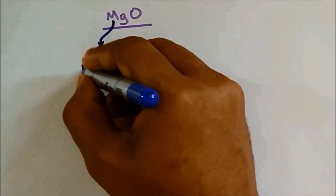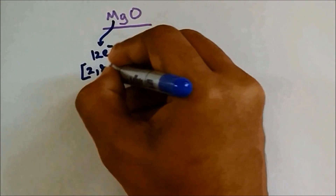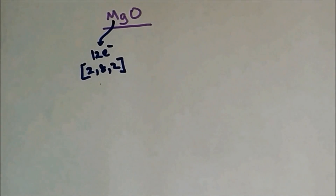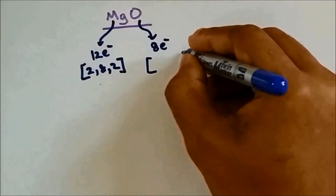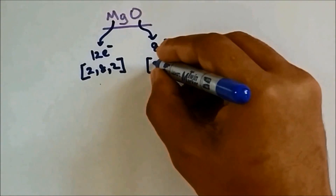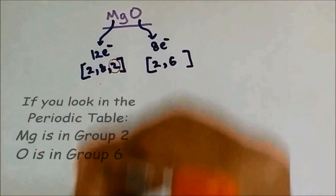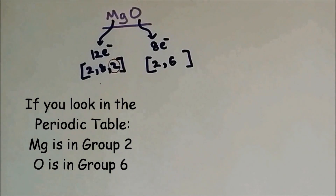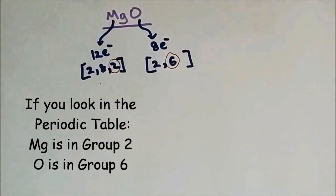Magnesium has 12 electrons, so the electron arrangement is 2,8,2. Whereas oxygen has 8 electrons in total, so the electron arrangement is 2,6. And if you look in the periodic table, magnesium is found in group 2, so it has 2 electrons in the outer shell. Whereas oxygen is found in group 6, so it has 6 electrons in the outer shell.